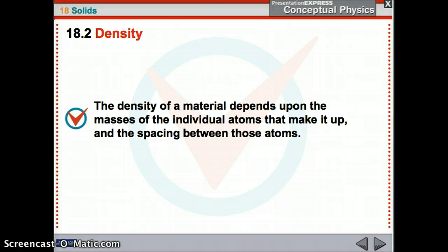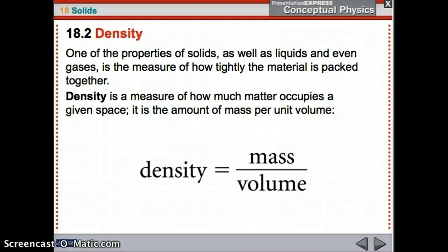Now we'll talk about density. I like to say density is the amount of stuff in a certain amount of space. The density depends upon the masses of the individual atoms that make it up, and the spacing between those atoms. If you have really heavy atoms that are really close together, it's going to be a really dense material. But if you have really heavy atoms that are super far apart, it may not be quite as dense.